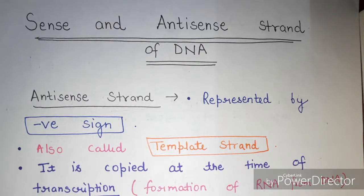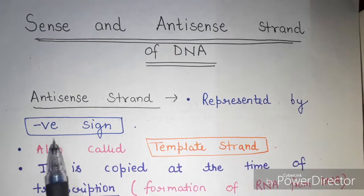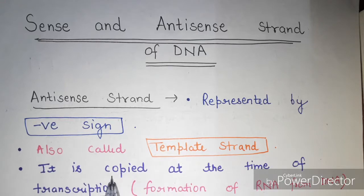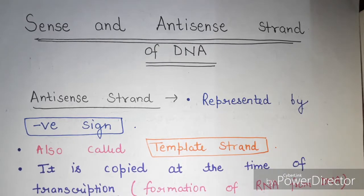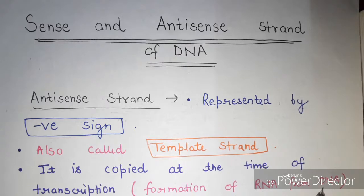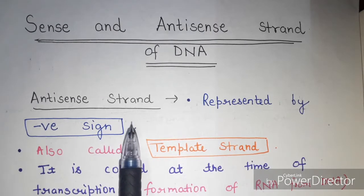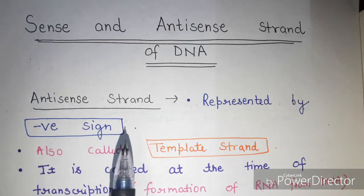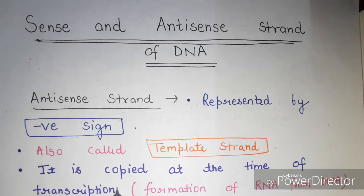Hello everyone, welcome to my channel all about biology. Today we will discuss the difference between the sense and the antisense strand of DNA. The antisense strand is called the template strand. It is represented by a negative sign, and it is copied at the time of transcription — the process of formation of RNA from DNA. The antisense strand is the DNA strand from which RNA formation takes place.